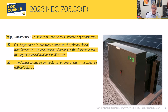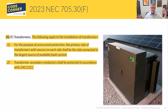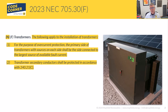For the purpose of understanding this code, we're going to call the utility side the primary side and the solar side the secondary. That can get a little confusing because in this scenario the inverter/solar side is 480V and the utility side is 208V — so the primary side would be the lower of the two voltages and the secondary would be the higher. Keeping that in mind with this code definition is an important thing to do.